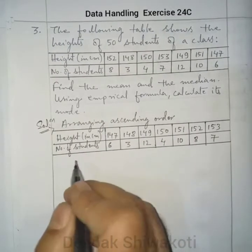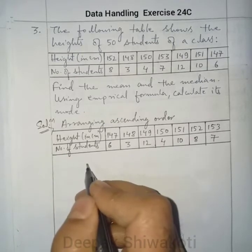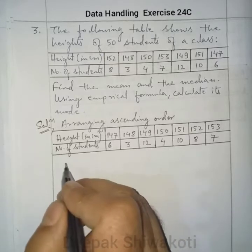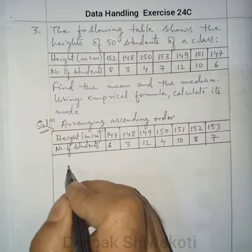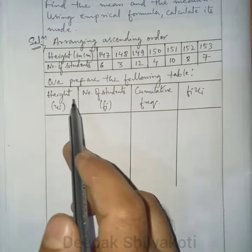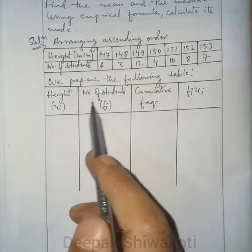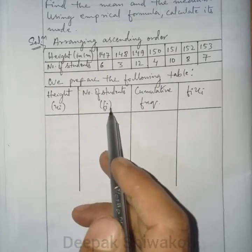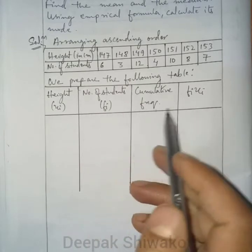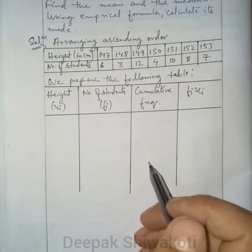Now we prepare a table with columns: height (xi), number of students (fi), cumulative frequency, and fi·xi. Heights run from 147 to 153, with corresponding frequencies filled in.